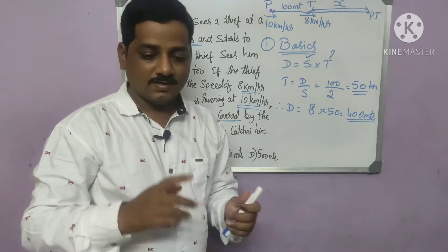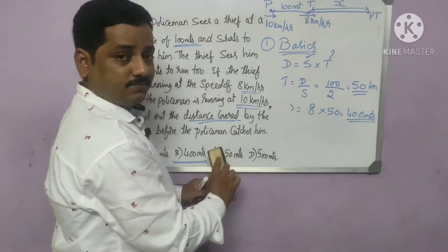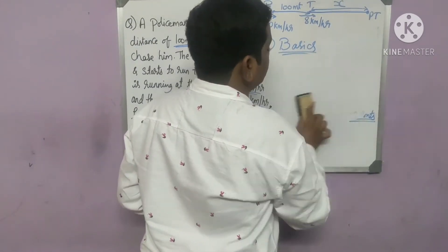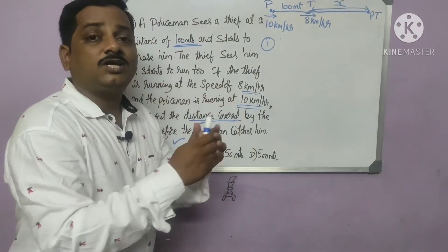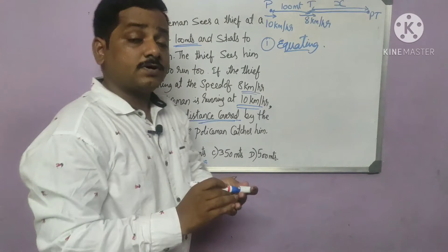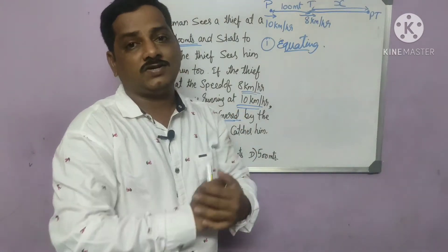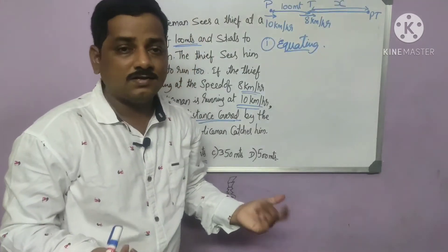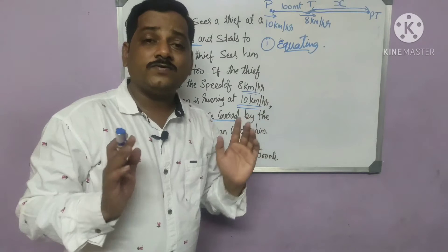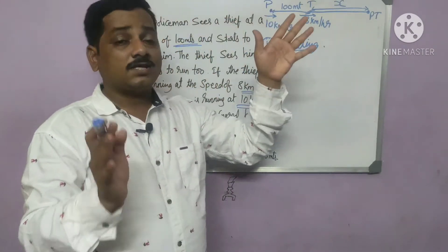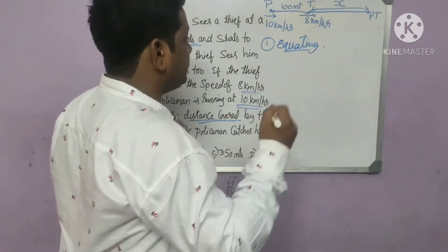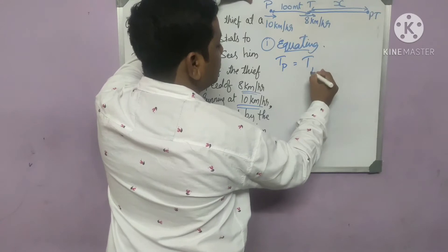Next method is equating. Equating concept means we equate the time taken by police equal to time taken by thief. The distance covered by police divided by speed of police equals the distance covered by thief divided by speed of thief.